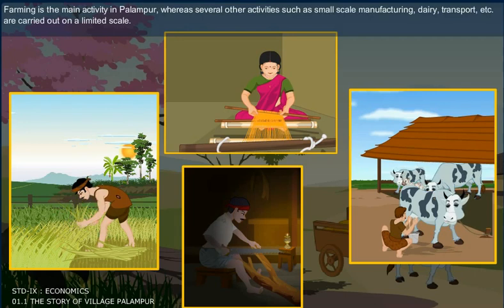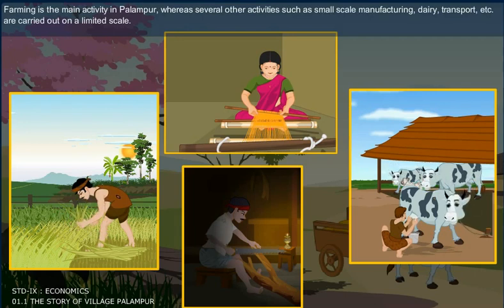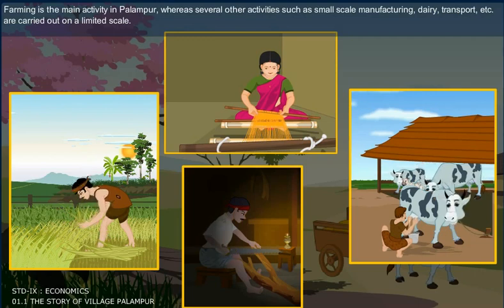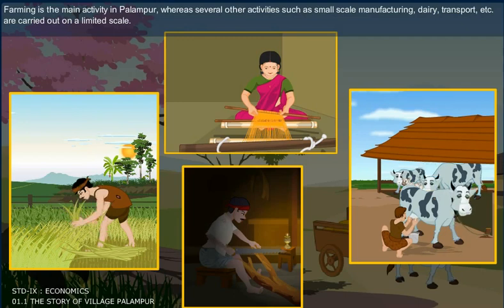Farming is the main activity in Palampur, whereas several other activities such as small-scale manufacturing, dairy, transport, etc. are carried out on a limited scale.